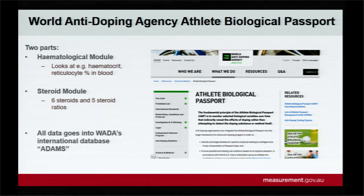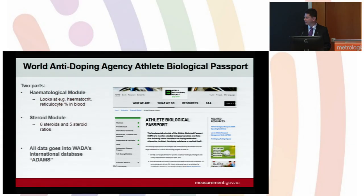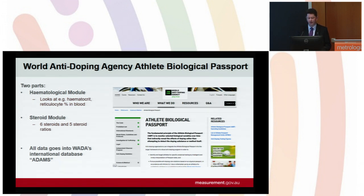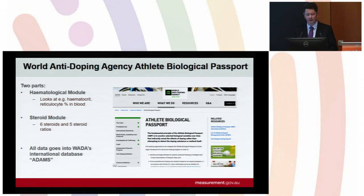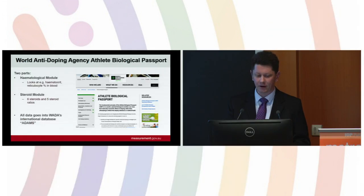The idea behind the Athlete Biological Passport is that an athlete's profile can be monitored over time, and the results of an individual test for an athlete that would otherwise appear normal to the general population could be atypical or suspect for that particular individual. All of the data that WADA laboratories generate for the Athlete Biological Passport go into an international database called ADAMS. For the steroid module, six steroids and five steroid ratios are monitored.